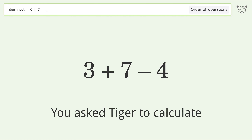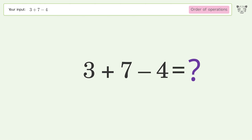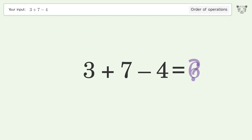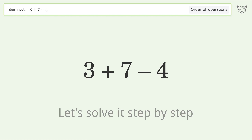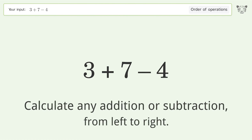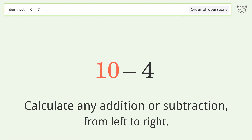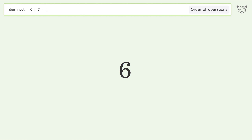You asked Tiger to calculate this. It deals with the order of operations — the final result is 6. Let's solve it step by step. Calculate any addition or subtraction from left to right: 3 plus 7 equals 10, then 10 minus 4 equals 6. And so the final result is 6.